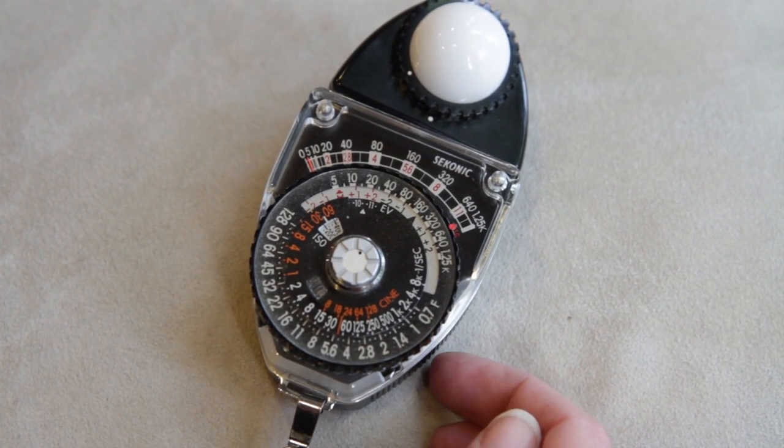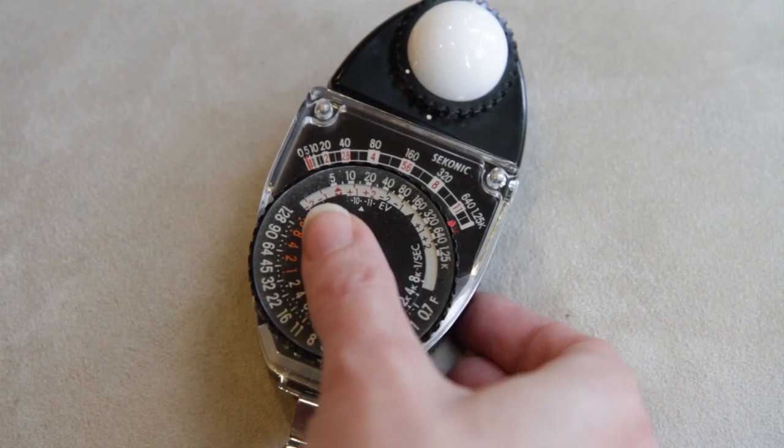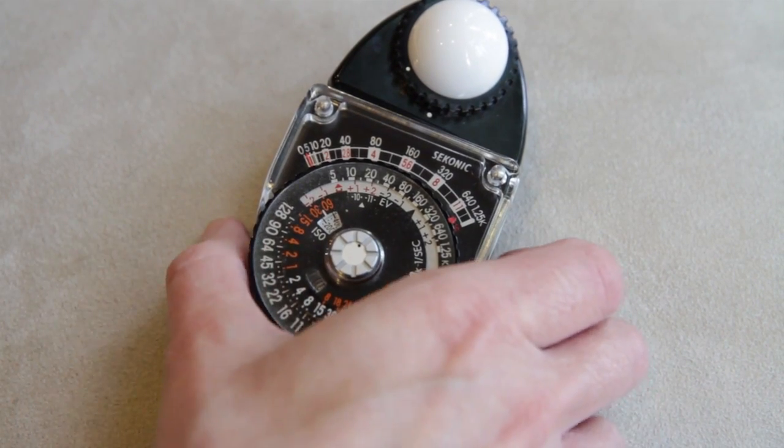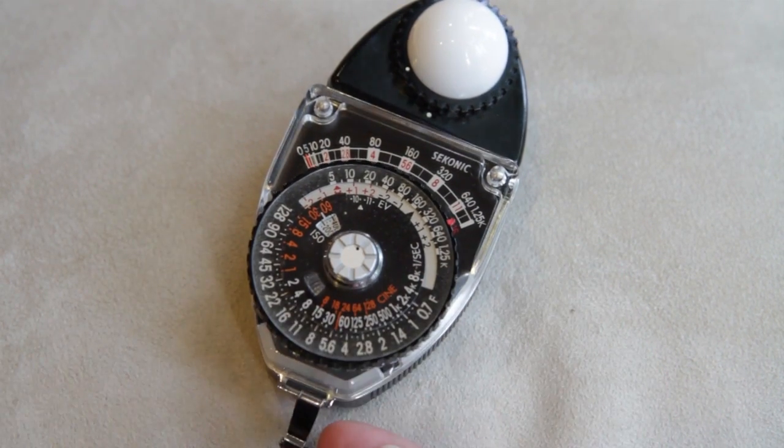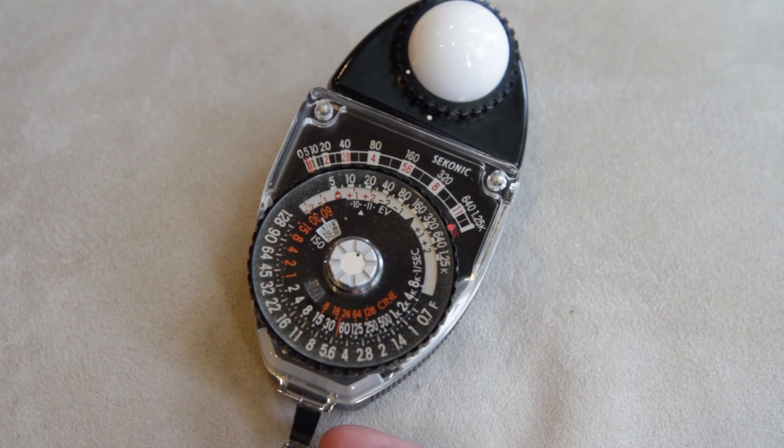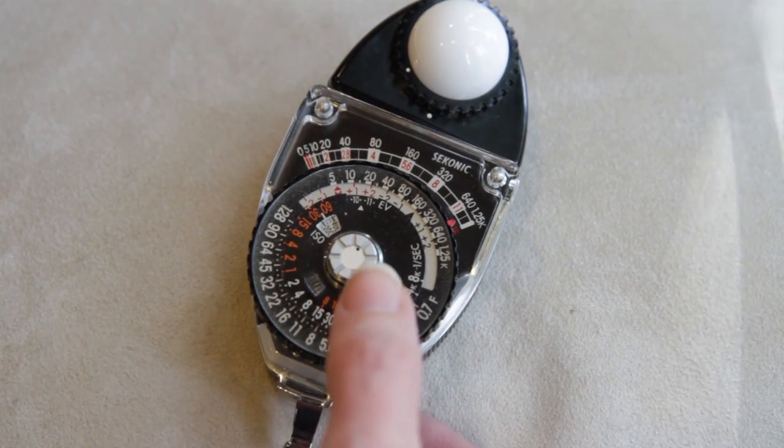Now the only big issue with this light meter, or with all light meters, handheld light meters, incident light meters, is the position that you hold it in. You want to hold it directly where the subject is. And to do that, we're going to head outside and take a light meter reading.